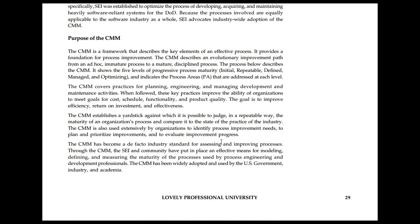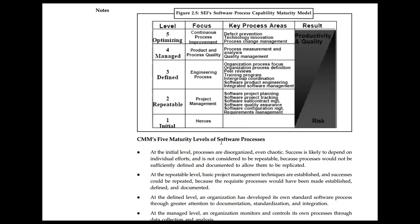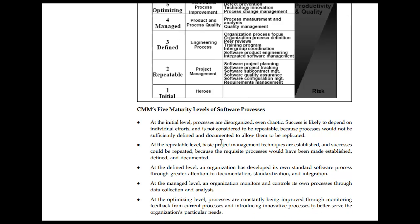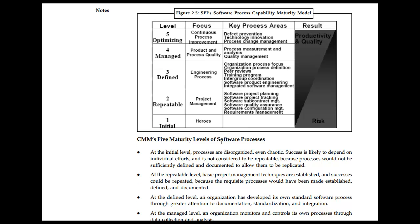CMM has become a de facto standard. The five maturity model levels are: Initial, Repeatable (with project management and software project planning), Defined (with engineering processes), Managed (with product and process quality), and Optimizing (with continuous process improvement).